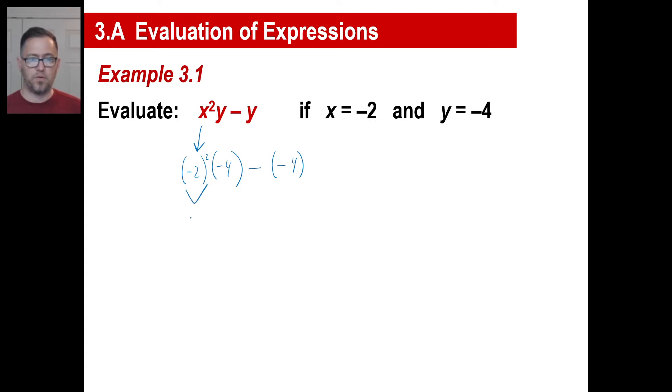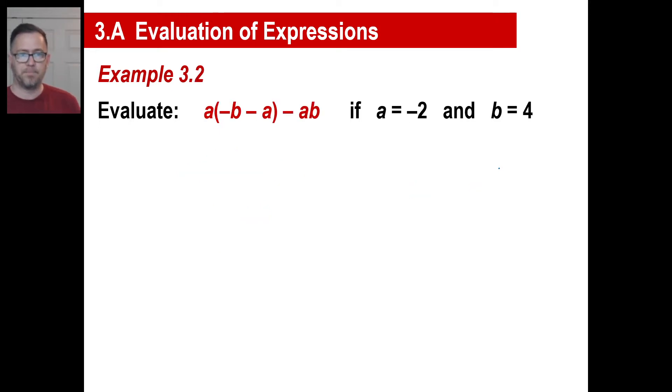The y is just negative 4, so I'll multiply that there, minus this number, which means I'm going to subtract negative 4. Negative 2 times negative 2 is 4, and then I'm going to multiply by negative 4. And then the opposite of negative 4 - subtracting a negative 4 is the same thing as adding 4. 4 times negative 4 is negative 16. Negative 16 plus 4 is negative 12. That's all we do.